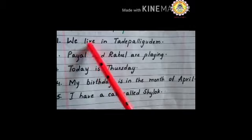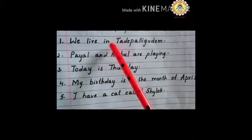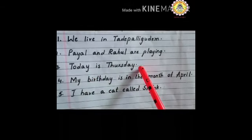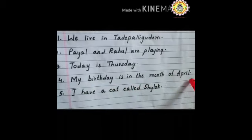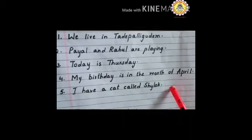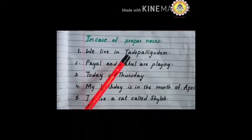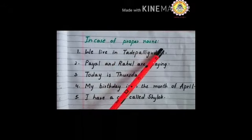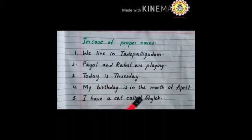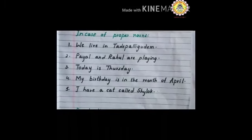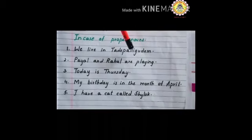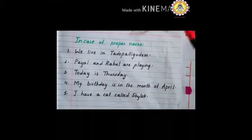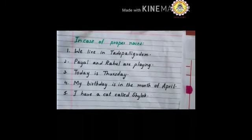Okay children, now observe these sentences I am going to read. You observe, children, that we used capital letters in the middle of a sentence. Do you know why? Because they are proper nouns, and the first letter of every proper noun should be a capital letter. Now let us know about proper nouns. A proper noun means a specific place, a particular name, a day in a week, or a certain month — these all come under proper nouns.